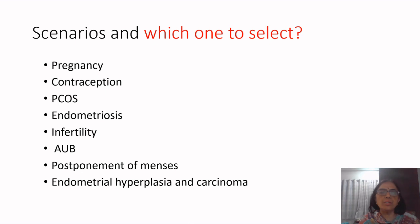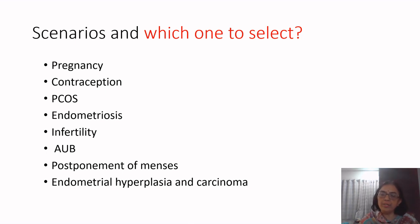There are various clinical scenarios where we need to select a particular type of progestogen. At present, the market is flooded with many types of progestogens, and the indications are equally diverse — right from pregnancy and contraception to PCOS, infertility, endometriosis, and endometrial hyperplasia or carcinoma, spanning from adolescent to postmenopausal age groups. That is why I have selected this topic, to help postgraduate students understand which one to prescribe.